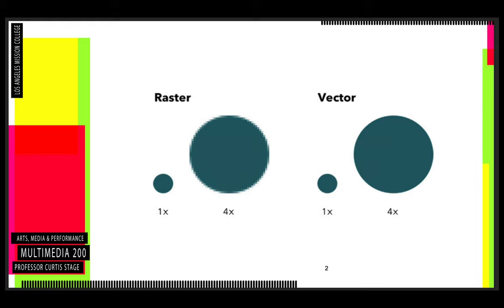Briefly, how these two things work: the raster or bitmap side, you can see in this scaling up of a circle on the left-hand side — that would be in Photoshop — and the right-hand side would be in Illustrator. What Photoshop does is it applies a color to every single little pixel square on your image. All of our computers, TVs, cell phones, cameras, DSLR cameras — they're all raster or bitmap-based image-making or image-displaying objects. There is no vector-based displaying object yet.